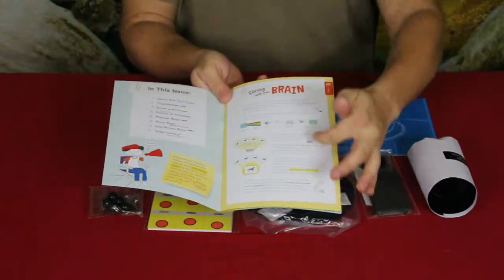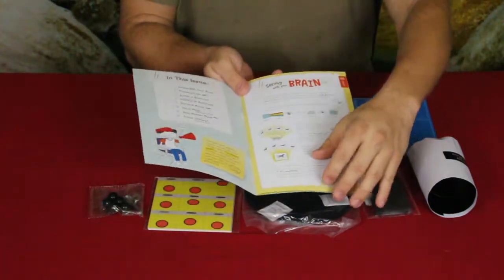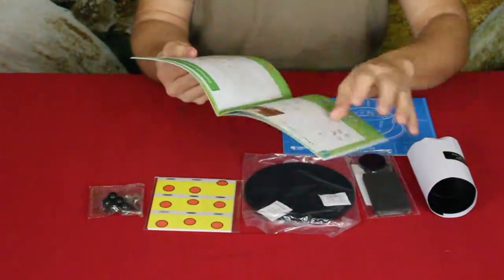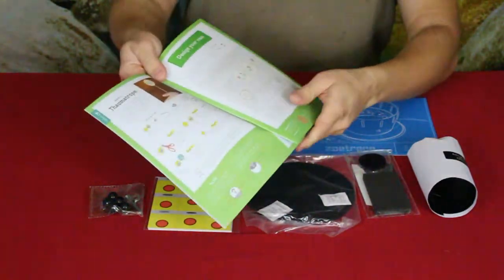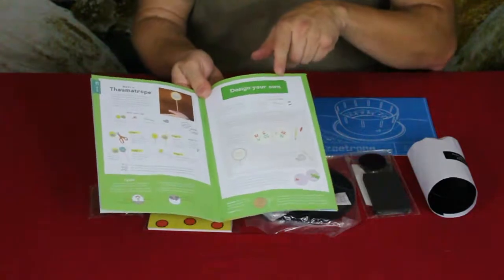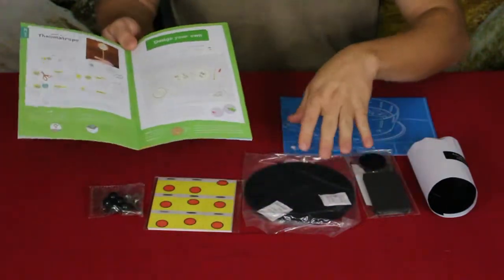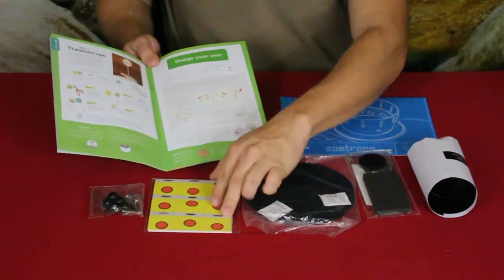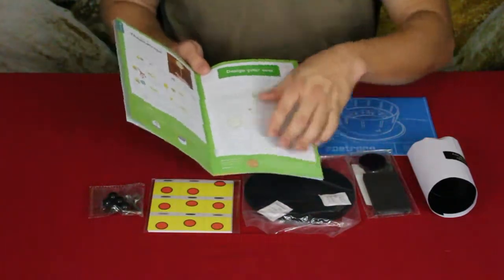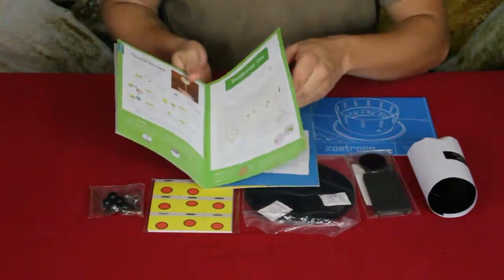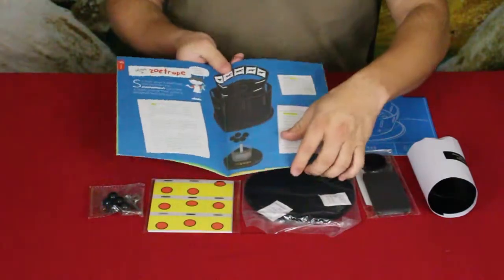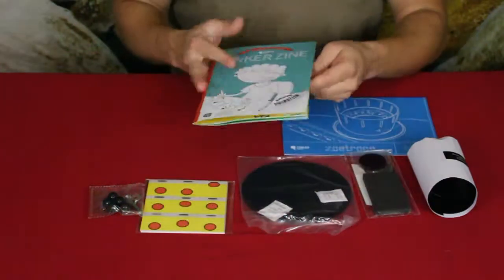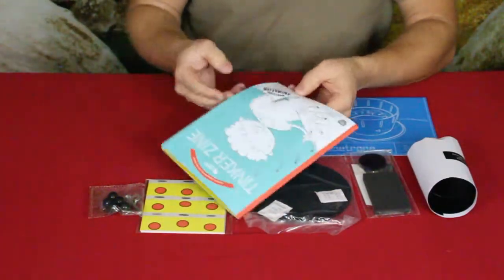You can see here they have a little bit of information right there showing some pictures and things like that, and it says 'seeing with your brain.' It tells you that you can actually design your own, so you can take this and make your own kind of designs and everything. Looks like we've got some pictures there already that we'll be using to start off with, but this way we can make our own. There's an idea on what it looks like when you put it together. So lots of interesting information there.